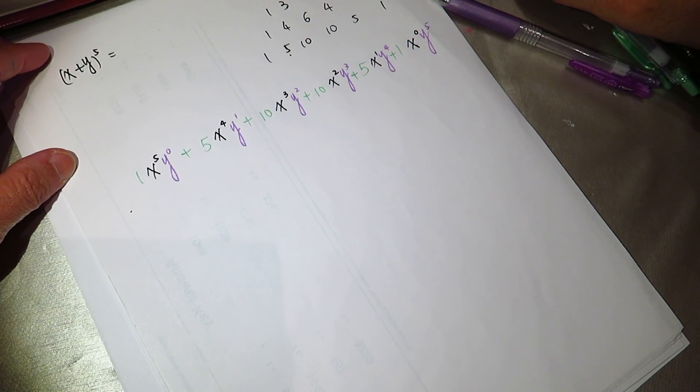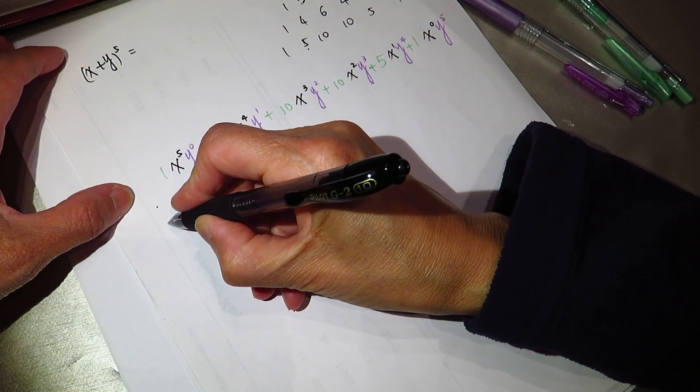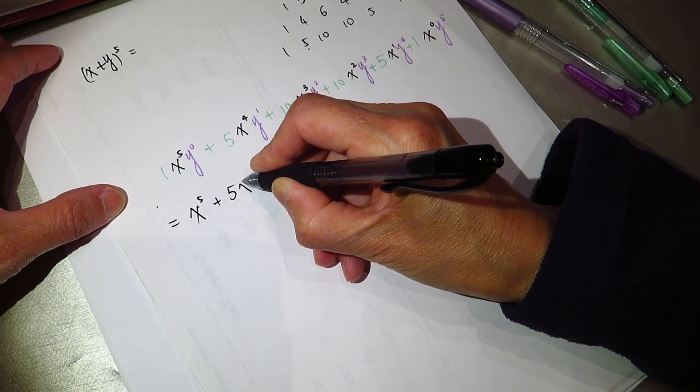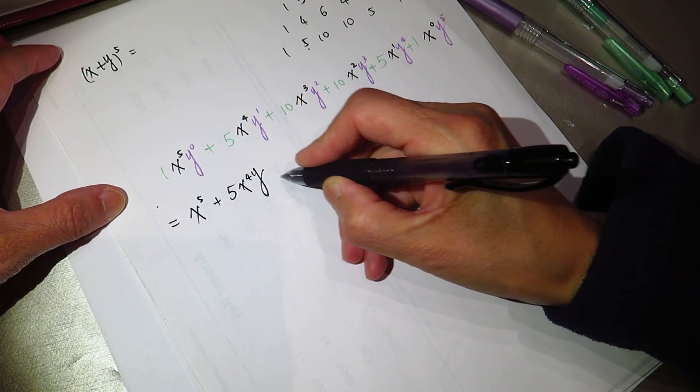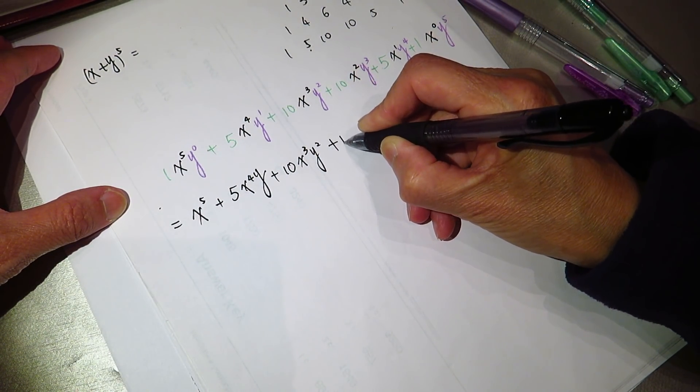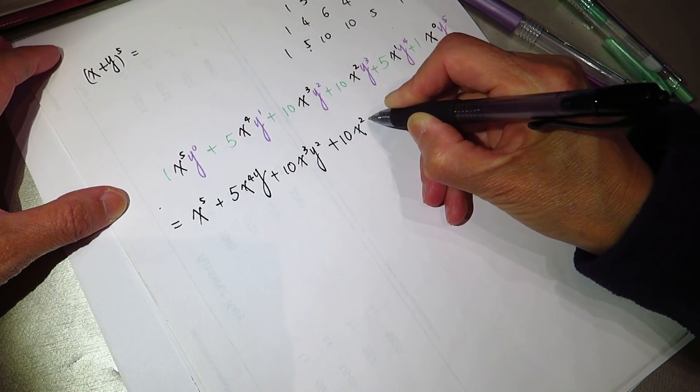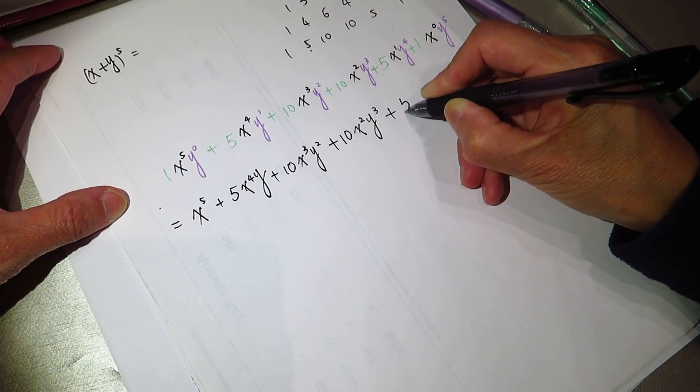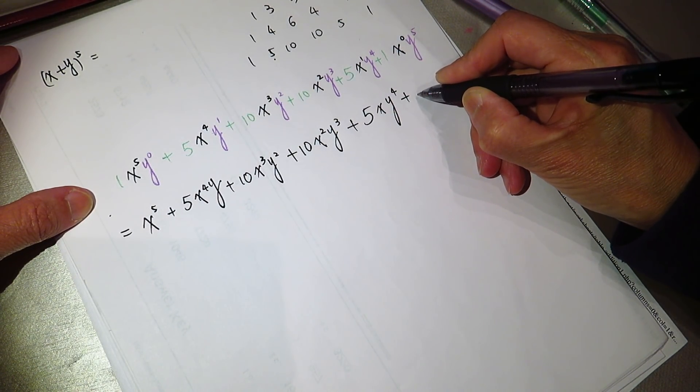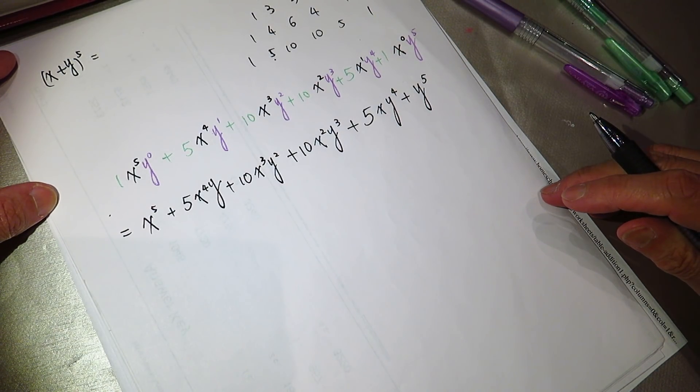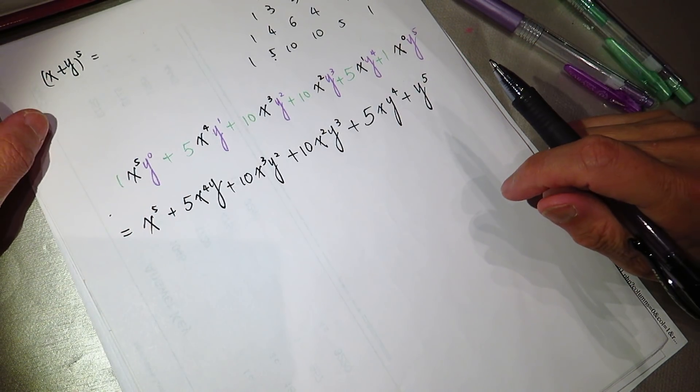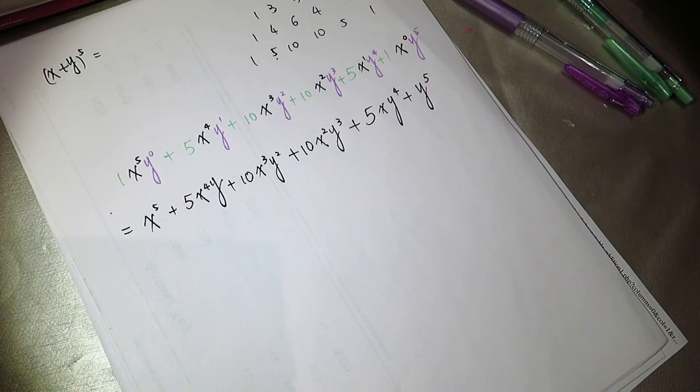So, at the end of the day, I write it clearly. X to the power of five, plus five X^4 Y, plus ten X^3 Y^2, plus ten X^2 Y^3, plus five X Y^4, plus Y^5, and this is what we are expanding. And that is it.